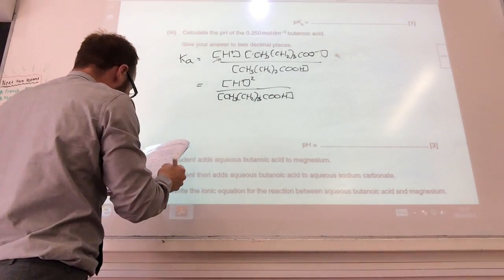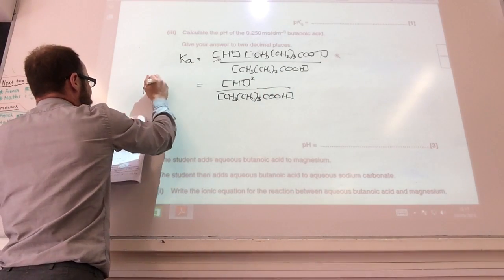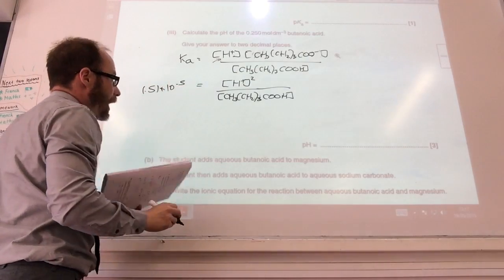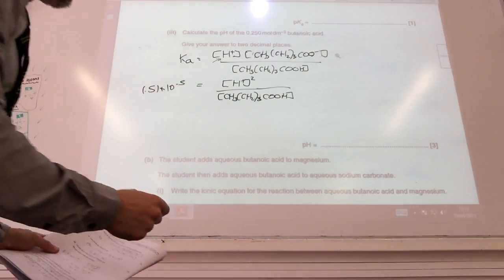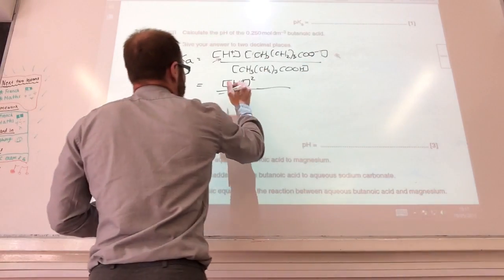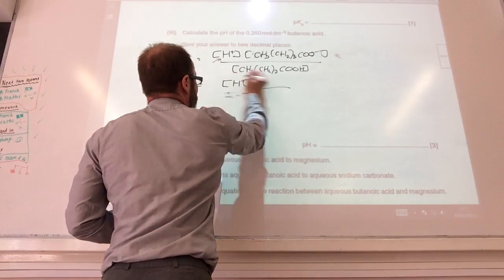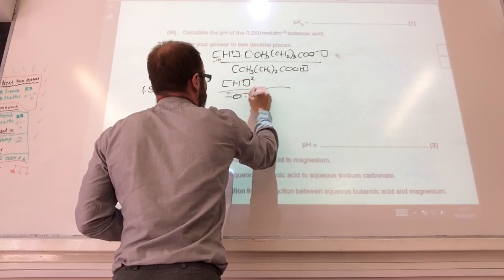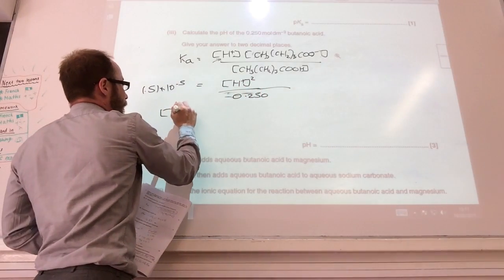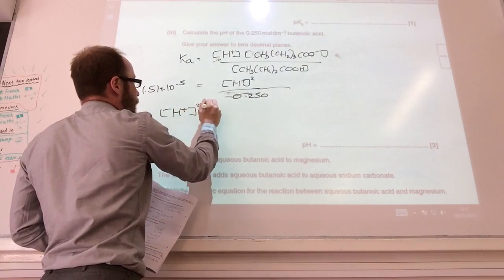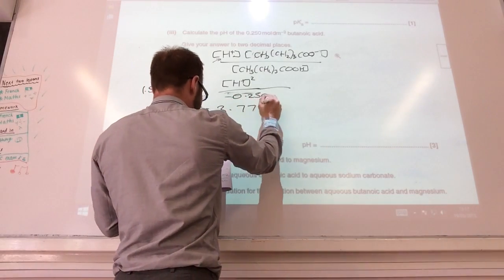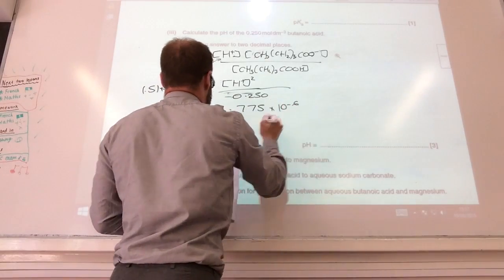is equal to Ka. Ka, they told me, is 1.51 times 10 to the minus 5. They've also told me the concentration of the acid up here. So let's replace that with 0.250.